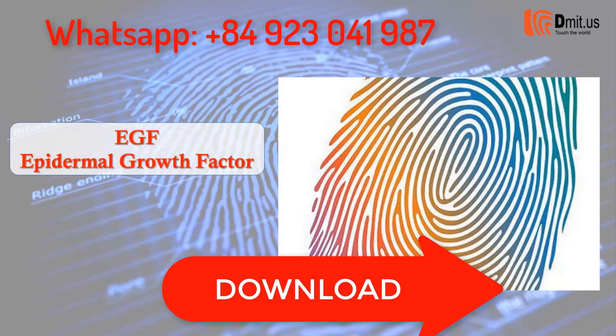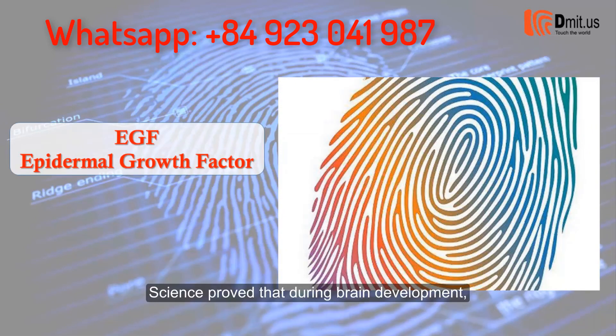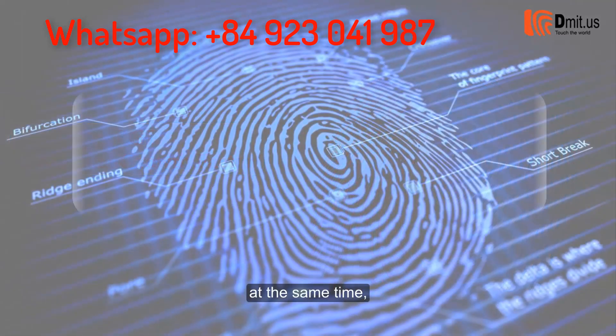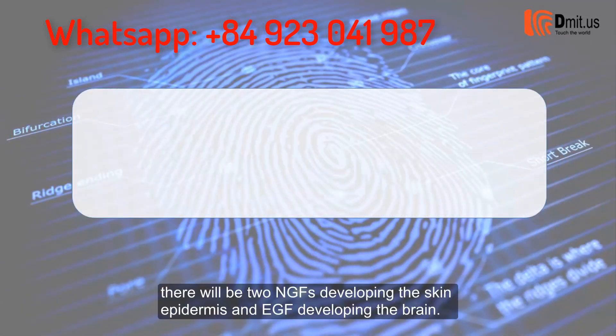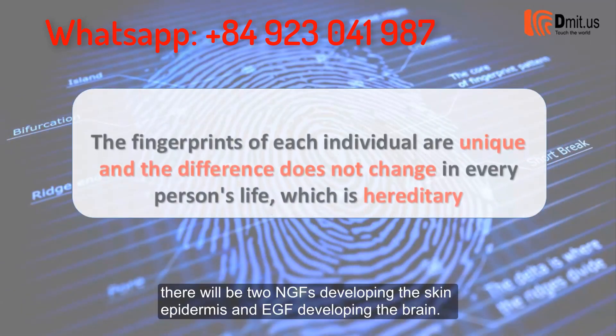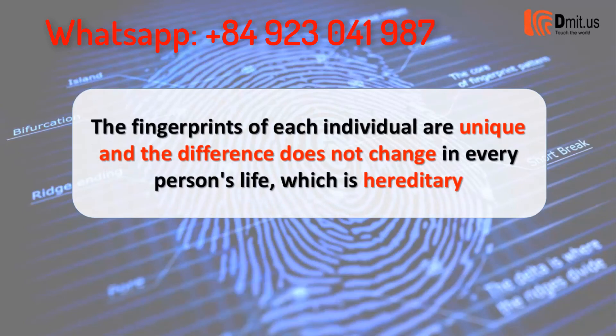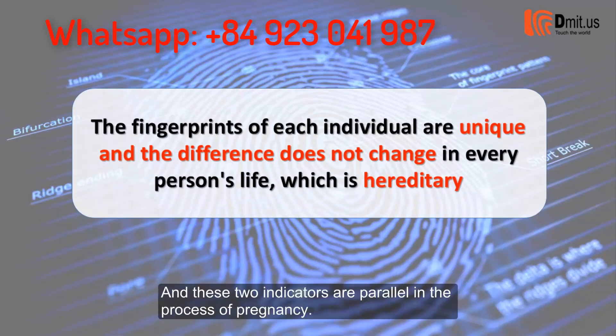Once again, science proved that during brain development, two parallel growth factors operate simultaneously: NGF developing the skin epidermis and EGF developing the brain. These two indicators develop in parallel throughout the process of pregnancy.